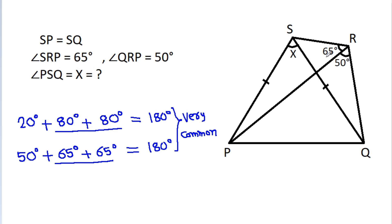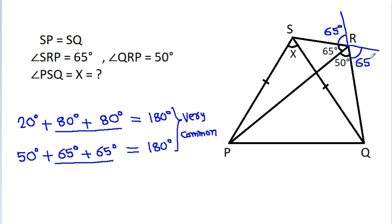We have 50 degrees and 65 degrees, so we can extend QR — then this angle will be 65 degrees — or we can extend SR, and then this angle will also be 65 degrees.